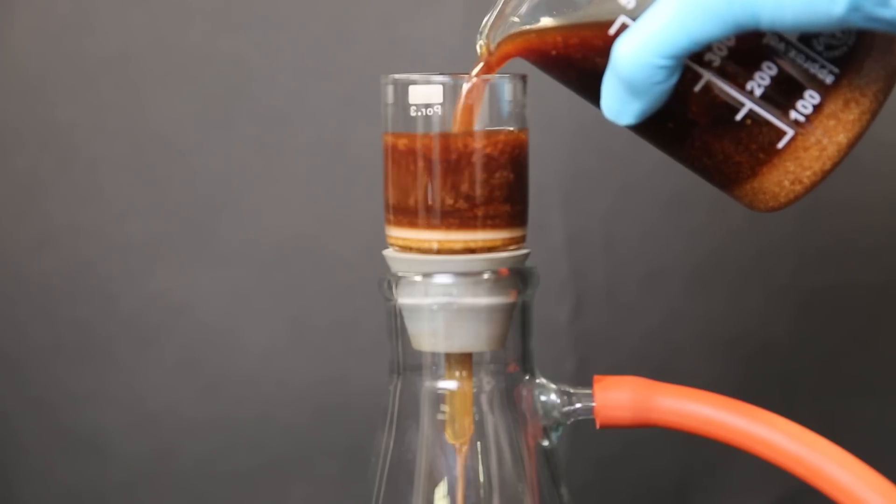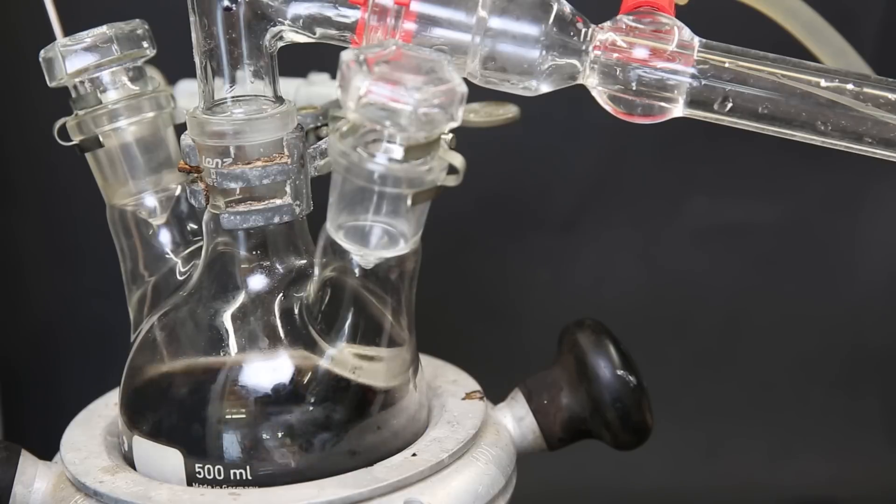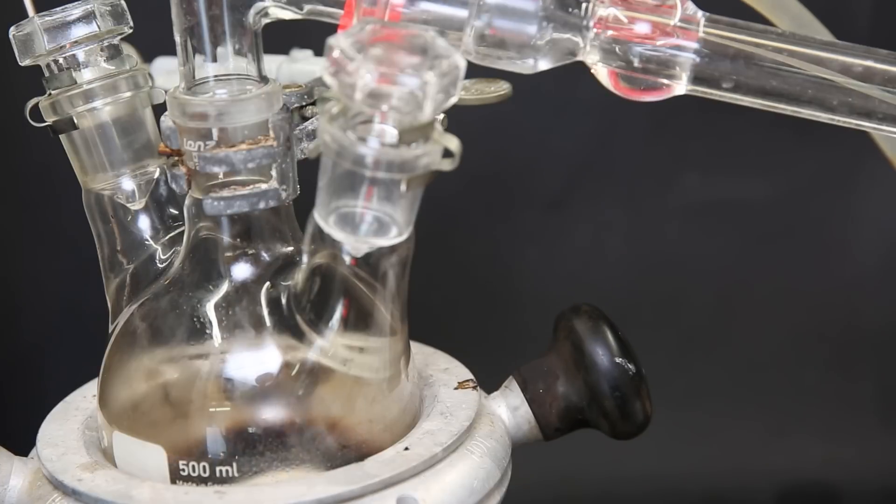So I filtered everything again and then set up the filtrate for a vacuum distillation. I simply boil off all of the DCM, and all that is left behind afterward is some impurities and molten crown. To purify the crown further, we have to distill it over as well.